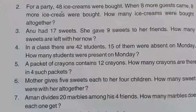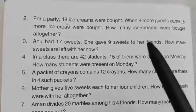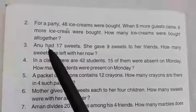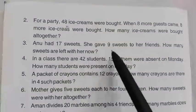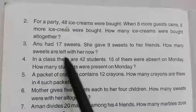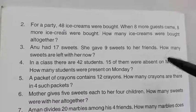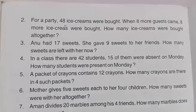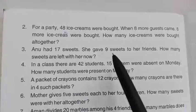Now let's move to the third question. Anu had 17 sweets. She gave 9 sweets to her friends. How many sweets are left with her now? From 17 sweets she gave away 9. Now what do we have to do to find the answer? Exactly — we need to subtract the numbers. From 17 we need to subtract 9. Let's do the rough work.